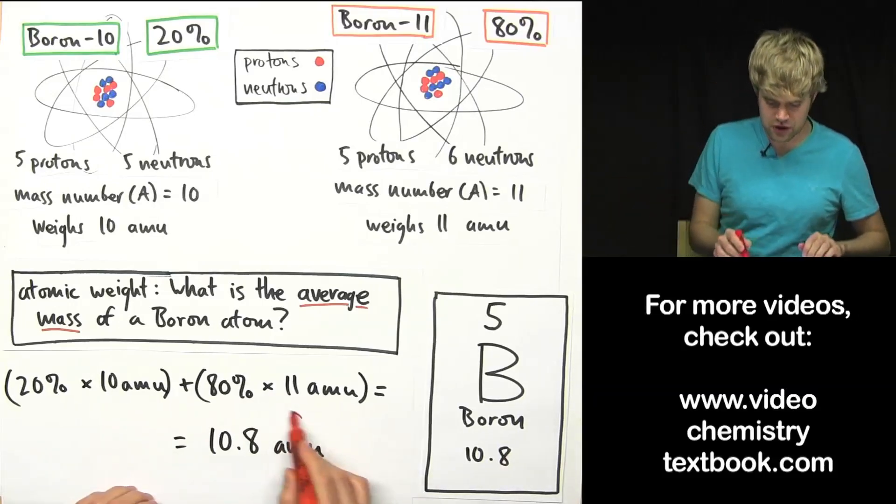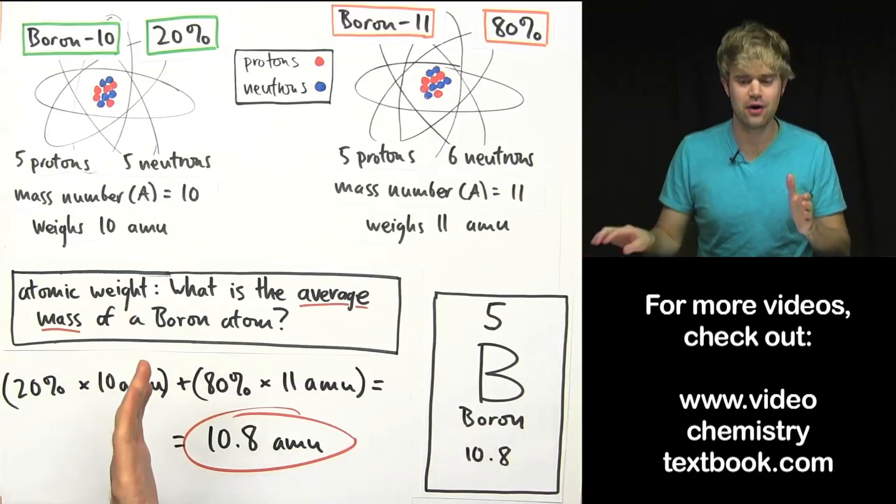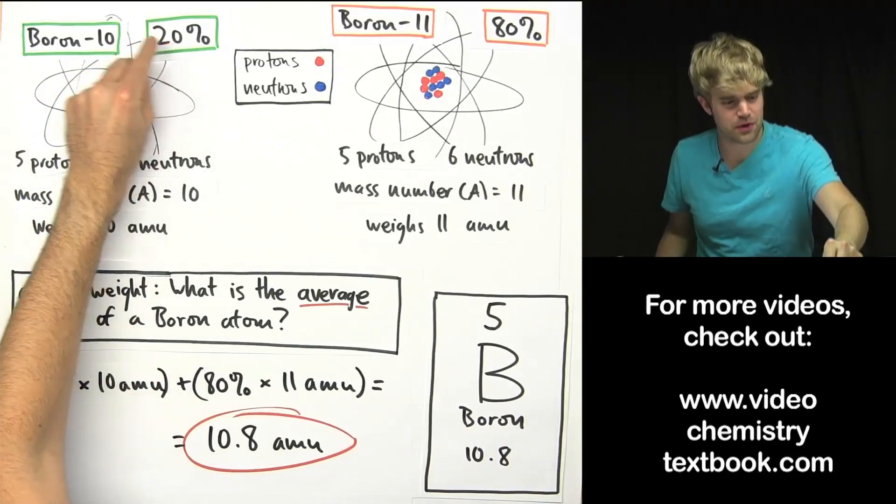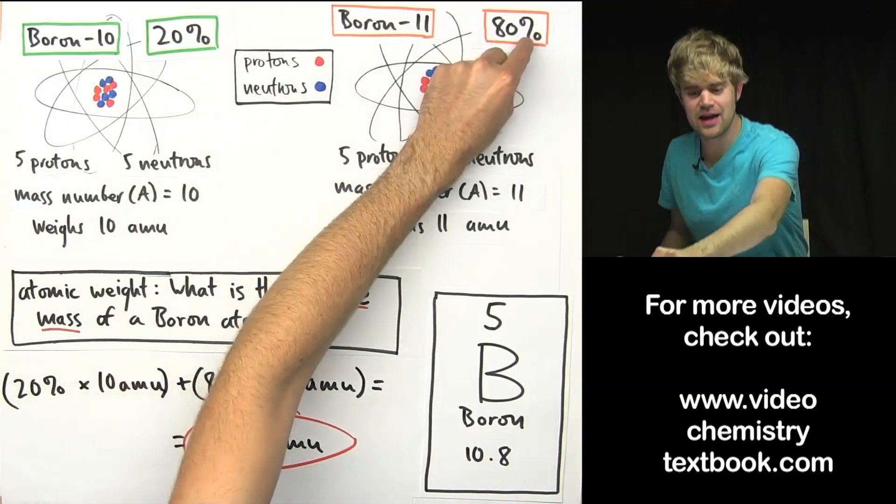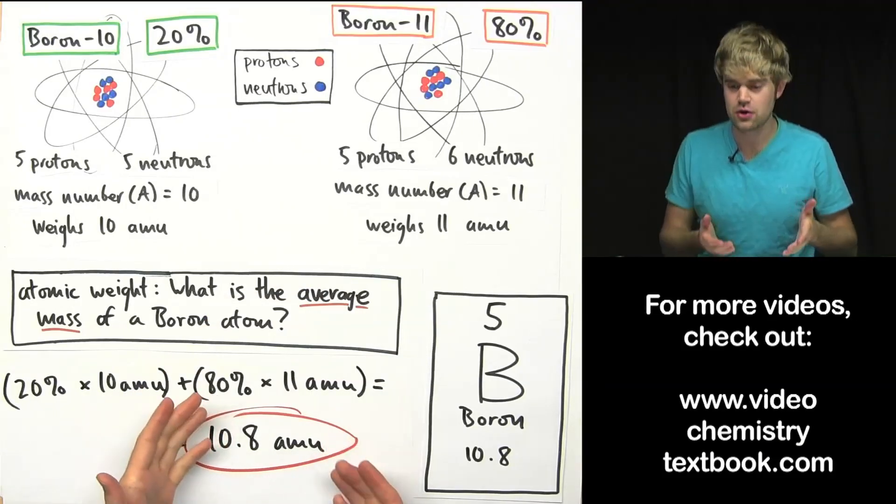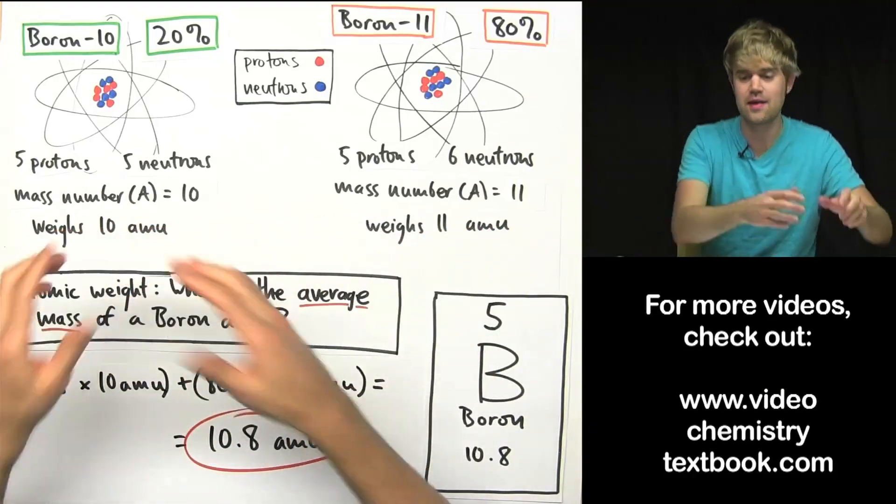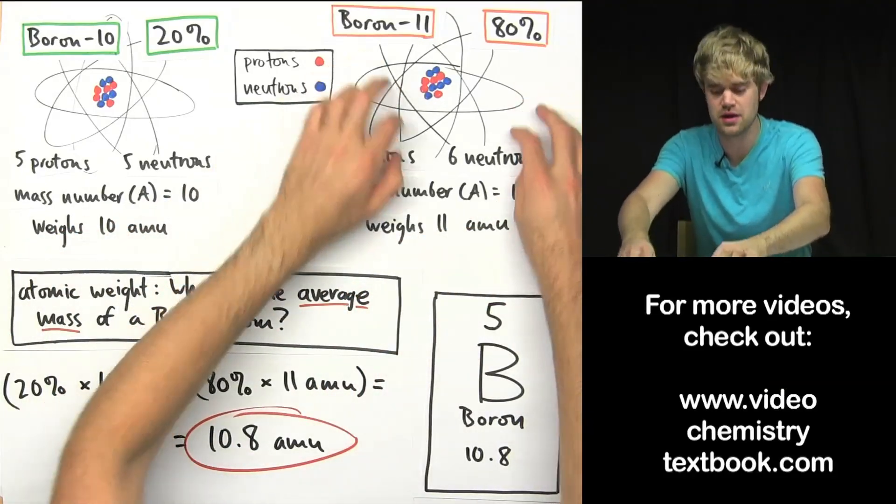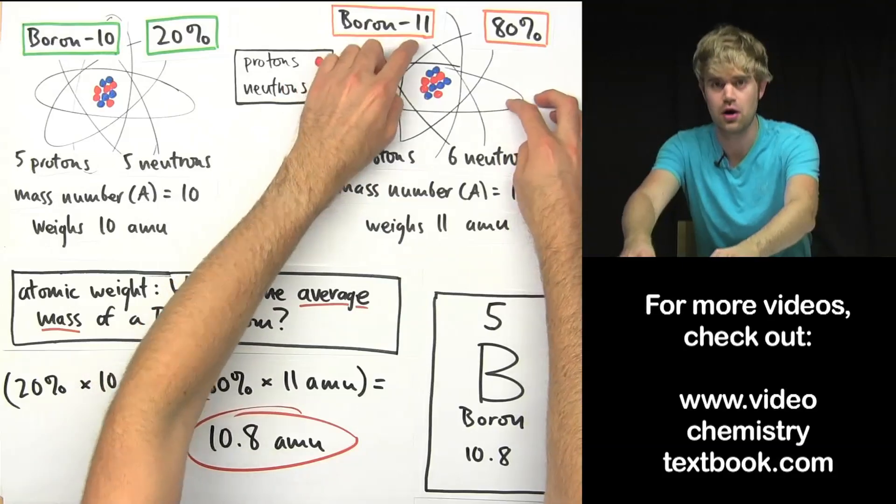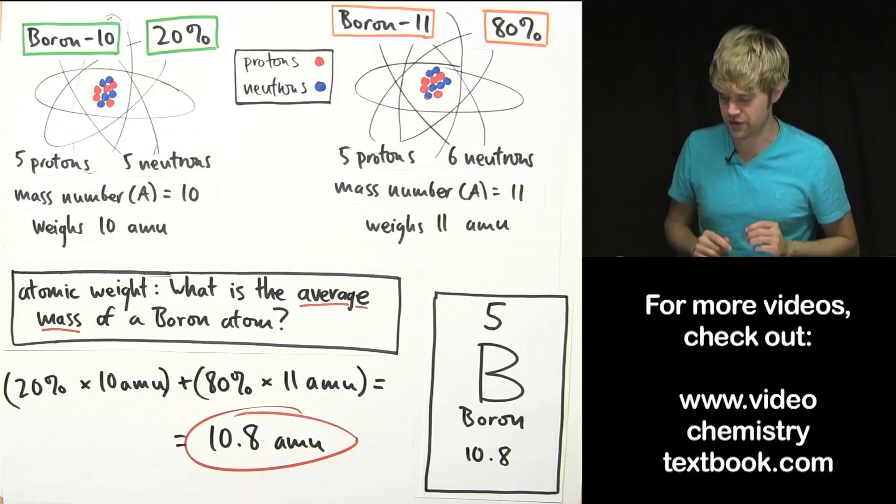That is the average mass of a boron atom when you take into account that they're only 20% boron-10 and 80% boron-11. So the average mass turns out to be a lot closer to 11 amu than it is to 10. And that makes sense because there's so many more of these. The average should be closer to 11 amu than to 10. And here's the final thing.